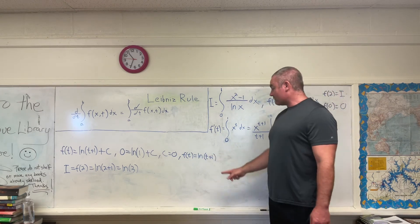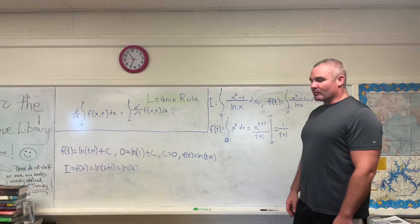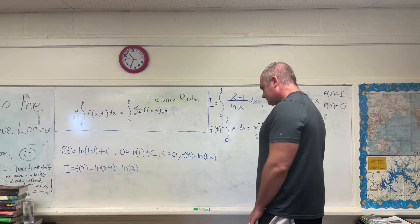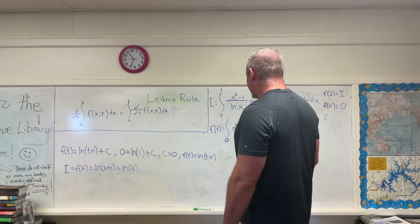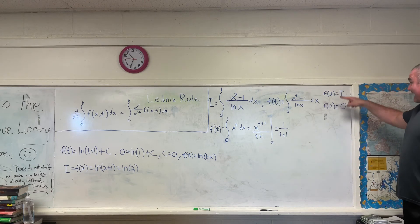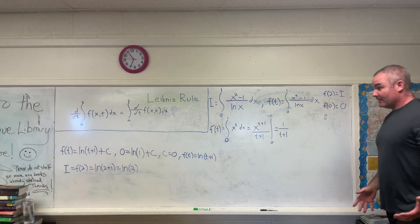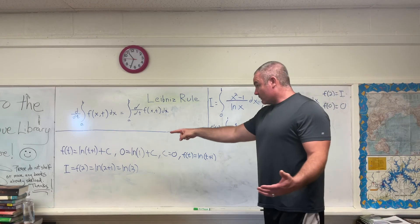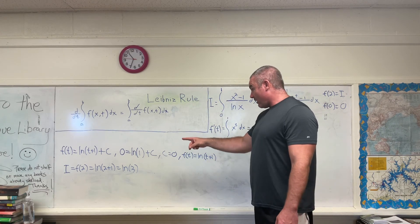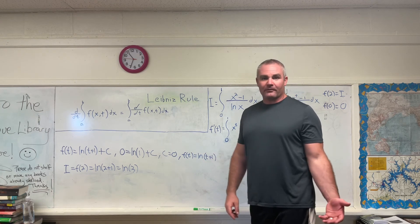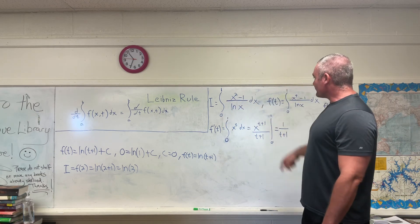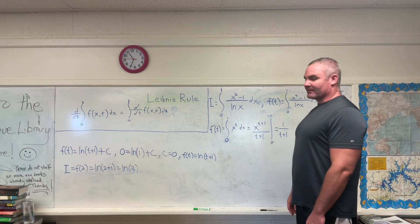So we can replace that c with nothing, giving us our final f of t being equal to the natural log of t plus one. And of course, you know, absolute value and all that, not important for this video, casual math channel. So now we have f of t and we already know that if you evaluate f at two, you get our answer. So we have I, which is what we want, is equal to f of 2, which is equal to the natural log of 2 plus 1, which is equal to the natural log of 3. And that's it, we're done. The integral from zero to one of x squared minus one over natural log x dx is the natural log of three.